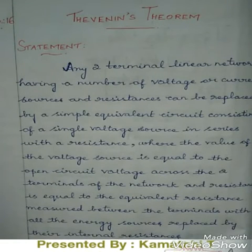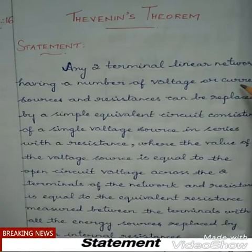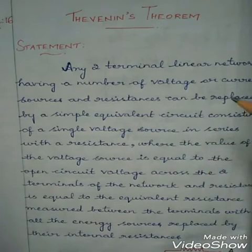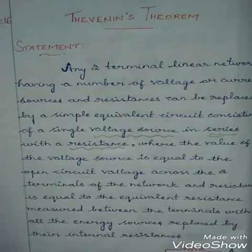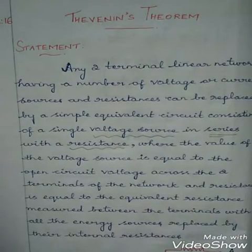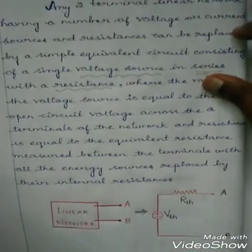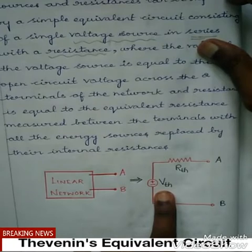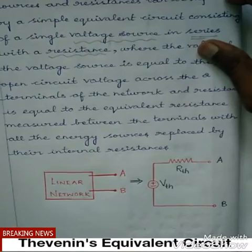First we can see the statement of Thevenin's theorem. Any two-terminal linear network having a number of voltage or current sources and resistances can be replaced by a simple equivalent circuit consisting of a single voltage source in series with a resistance. That voltage source is called Thevenin's voltage and that resistance is called Thevenin's resistance.